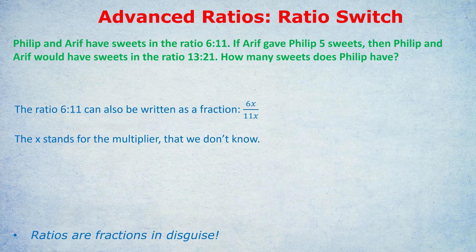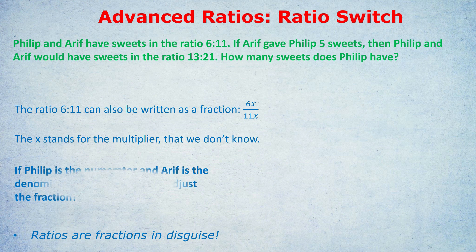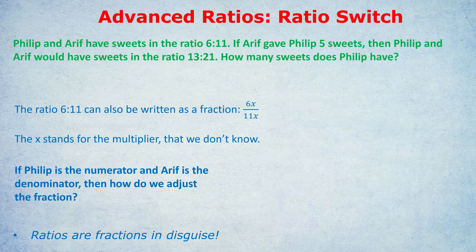Now, what about the changes? Arif gave Philip 5 sweets. There has to be some sort of change, otherwise why would the ratio change? So how do we incorporate this change that Arif gave Philip 5 sweets? What happens to Arif's amount and what happens to Philip's amount? Well, you can probably answer that and say that Philip's amount goes up by 5 and Arif's amount goes down by 5. Philip was the 6x, so he goes up by 5, and Arif was the 11x, so he goes down by 5. So I've asked the question, if Philip is in the numerator, because he stands for the 6, and Arif is the denominator, how do we adjust the fraction?